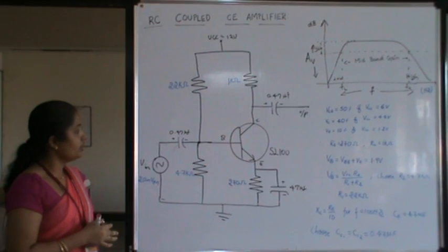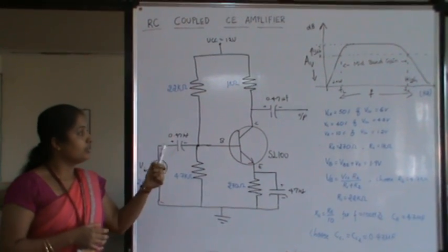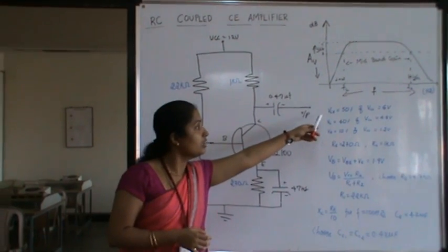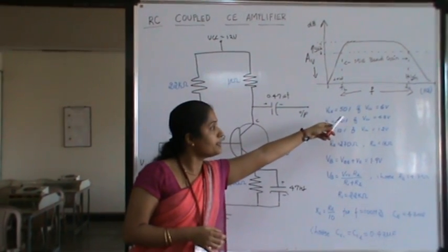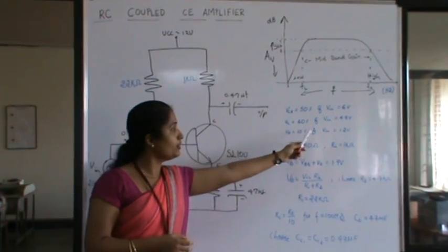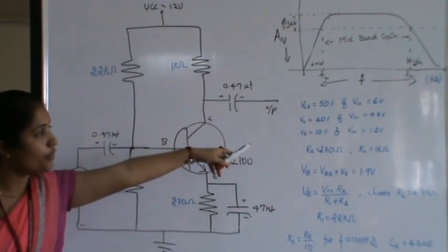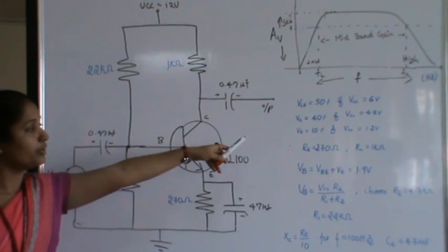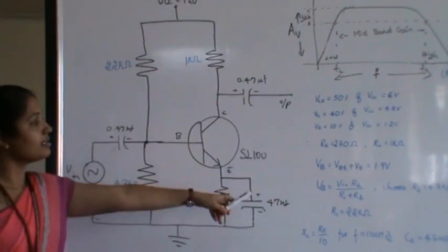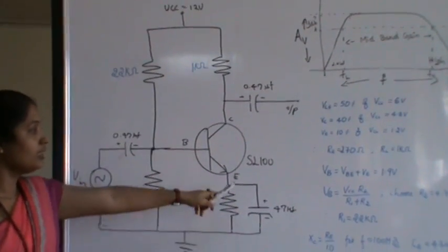And here let us see the circuit. In this circuit you can see the design here. VCE is equal to 50 percent of VCC which is 6 volt. VC is equal to 40 percent of VCC which is 4.8 volt. VE is equal to 10 percent of VCC that is 1.2 volt.